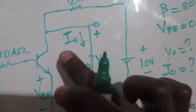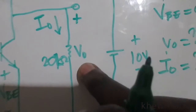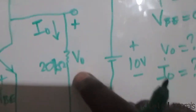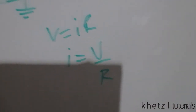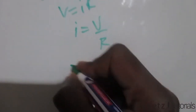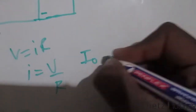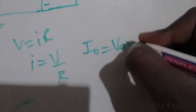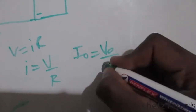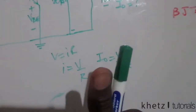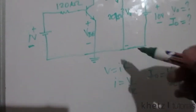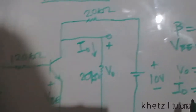Here's our circuit. Io is over there and Vo is over there, so we can quickly form a relationship between Vo and Io. Using Ohm's Law — V equals IR and I equals V divided by R — we can say Io equals Vo divided by 20 kilohms.